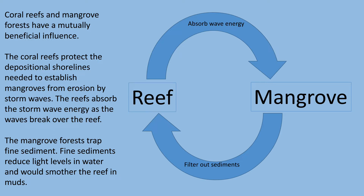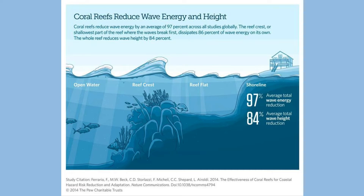Mangroves are actually really good at protecting coastlines and would be quite helpful in the fight against sea level rise, and we're trying as best we can to repair the damage we created. So — symbiotic, mutually beneficial: reefs take the energy out of waves which protects the mangroves, and mangroves keep the water clean so that the reef can photosynthesize. They are also really good nurseries for fish.